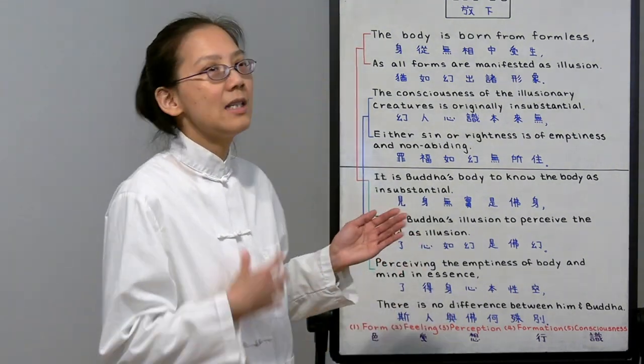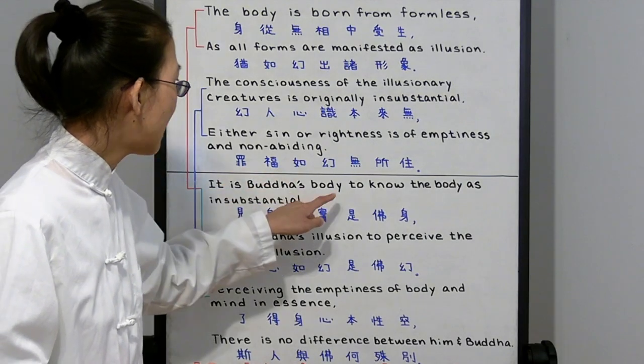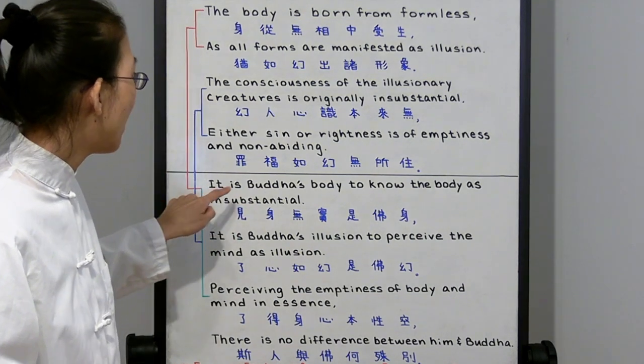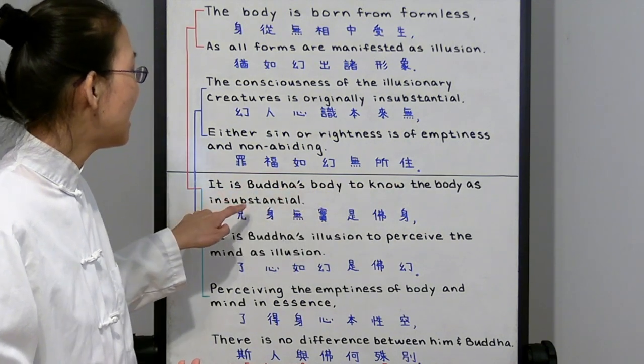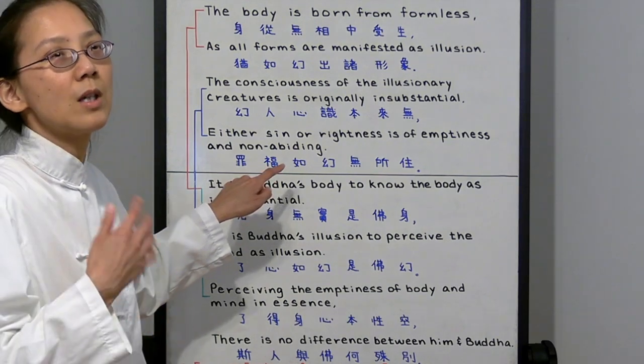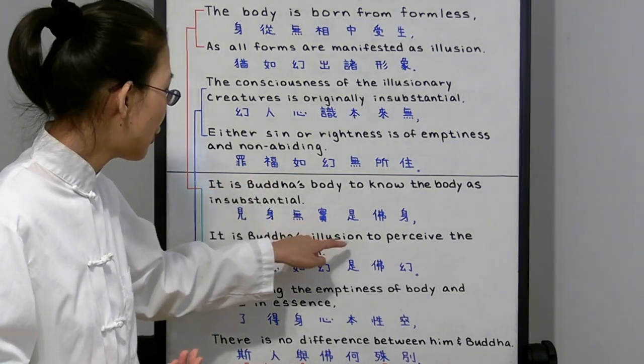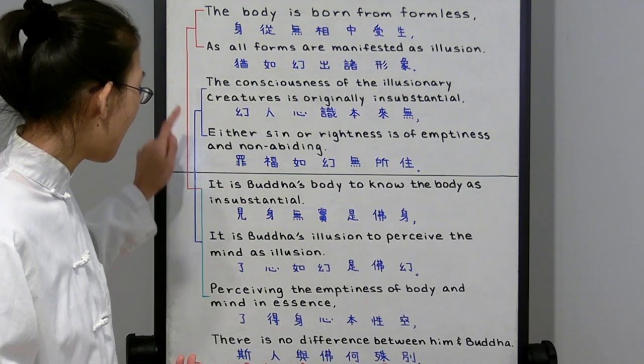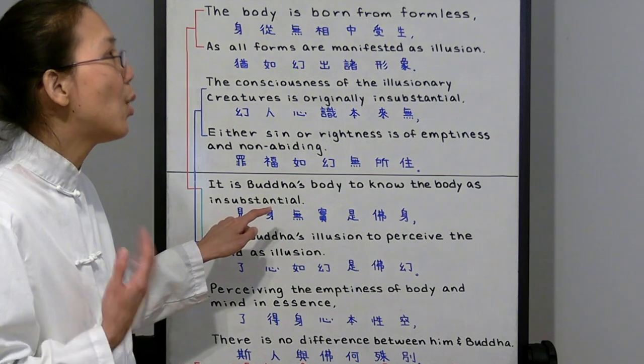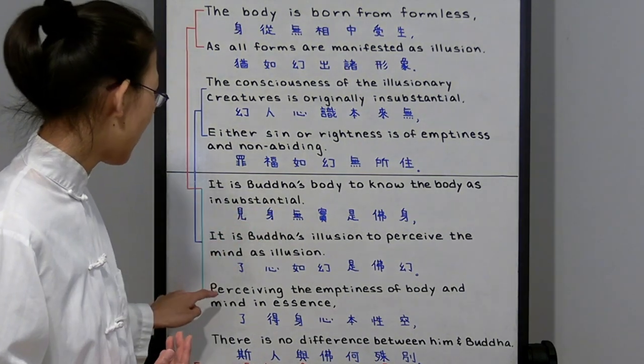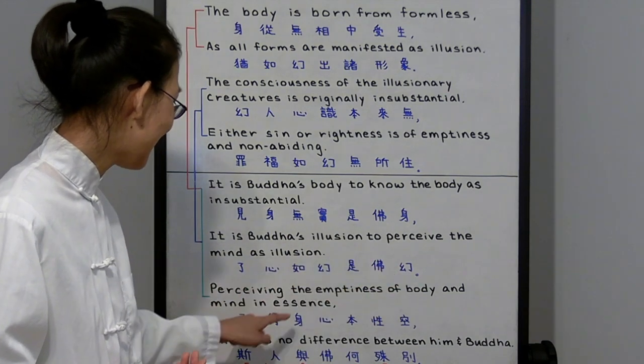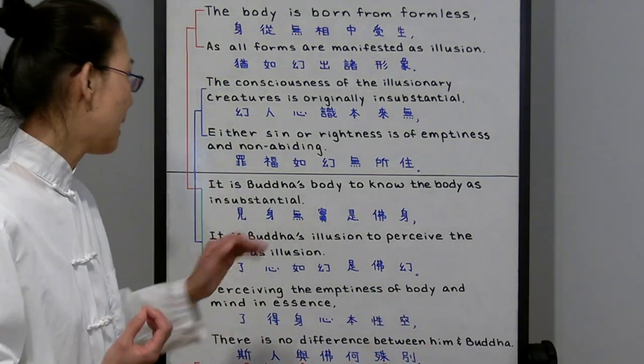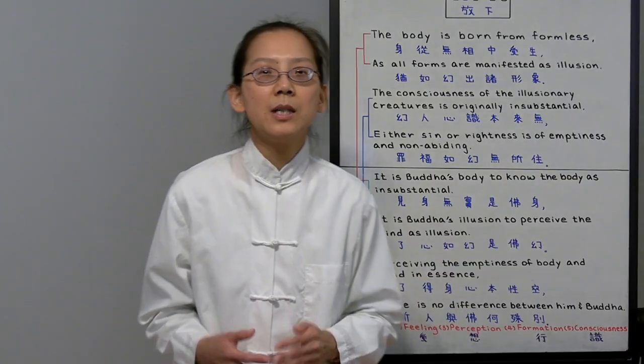The second verse of this Buddha is telling us just that. It is Buddha's body to know the body as insubstantial. This is talking about the first two lines about the body. When you recognize that your body is empty, then you have the Buddha body. We call it the Dharma body. It is the Buddha's illusion to perceive the mind as illusion. That's talking about the two lines here. When you see our consciousness, our mind is actually illusion, that's Buddha's knowing. That's Buddha's illusion. The two together, perceiving the emptiness of body and mind in essence, there is no difference between him and Buddha.